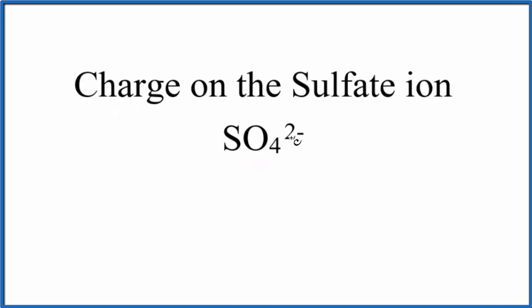There are two ways we can really figure this out. One is to think about compounds that have the sulfate ion in them. So something like Na2SO4, that's sodium sulfate, or calcium sulfate, CaSO4.